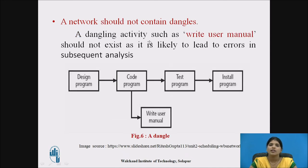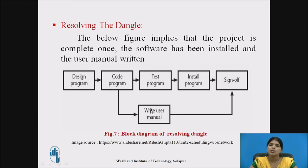The next rule is that a network should not contain a dangle. Here, 'write user manual' should not exist as a hanging activity, as it is likely to lead to errors in subsequent analysis. The write user manual activity is a dangle — a hanging activity — and it is not allowed in the network. To resolve the dangle, after installation of programming and writing the user manual, we must end with a finish node.